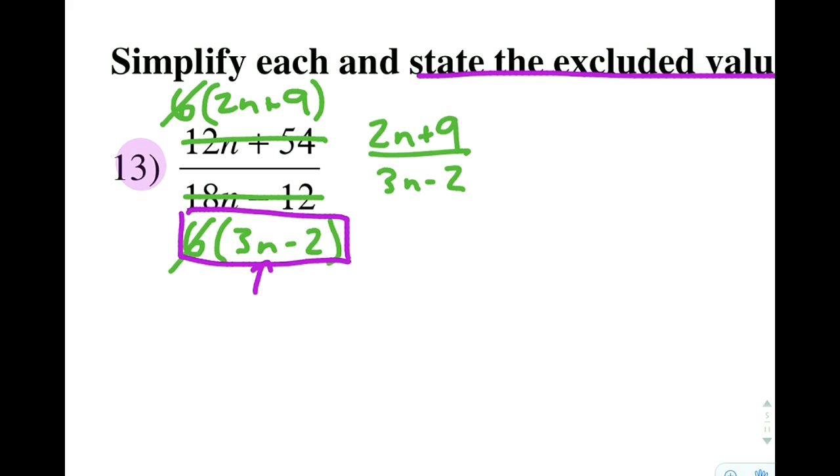And since n only appears here, we only need to look into this group. What could we plug in for n to make it equal 0? If we are not sure, we can just write it equal to 0, add 2 to both sides, 3n equals 2. And when we divide it out, we find that n is 2 thirds is the excluded value.